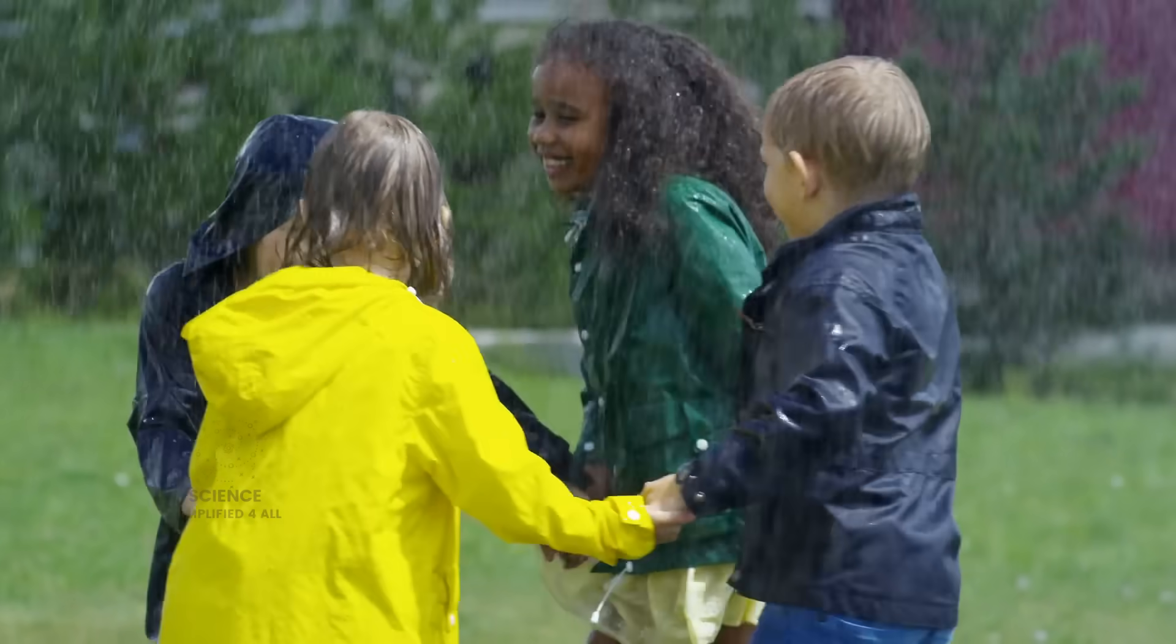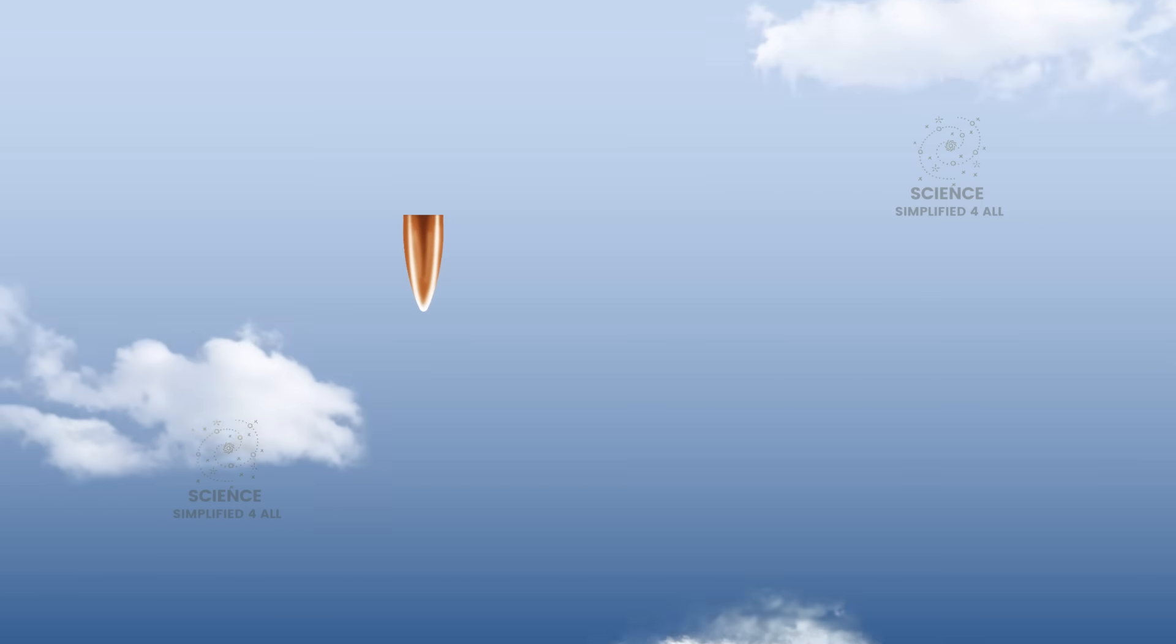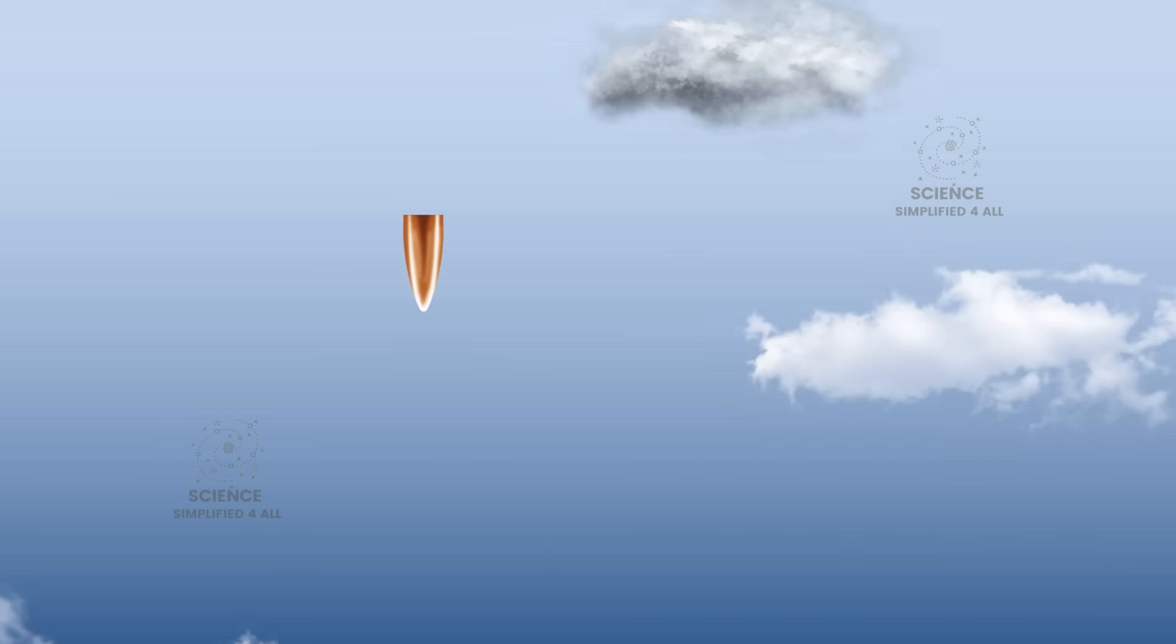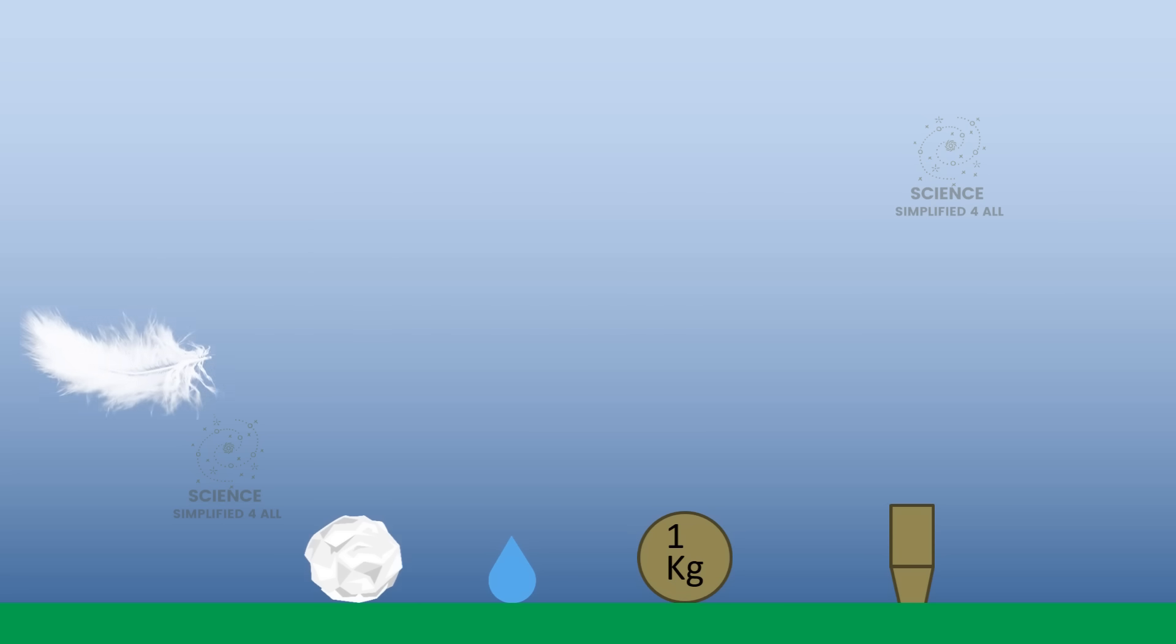But the case of a falling bullet is very different. First, a bullet is much heavier than a raindrop. Second, its shape is sharply pointed, and its surface is smooth. Because of this, it experiences much less air resistance. So, a much higher speed is required for air resistance to balance its weight. That is why the terminal velocity of a bullet is significantly higher than that of a raindrop. In short, the shape and density of a falling object play a big role in deciding its terminal velocity.